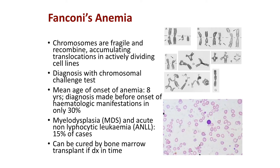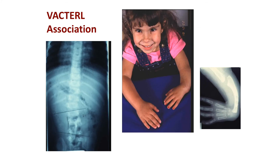Contrast that with Fanconi anemia, where the chromosomes are fragile and recombine, accumulating translocations in actively dividing cell lines such as hematopoietic cell lines. Diagnosis is with chromosomal challenge tests, and it's really important to do this because patients do not present with anemia until about eight years of age. By that point, if there's no bone marrow donor who's a good match, the patient will die. Even with bone marrow transplant, these patients can still develop myelodysplasia and acute non-lymphocytic leukemia in about 15% of cases. You can also see vertebral anomalies and a whole host of other anomalies.